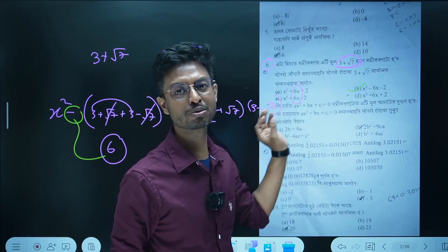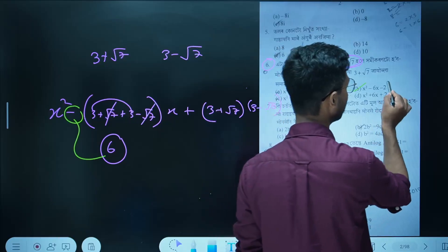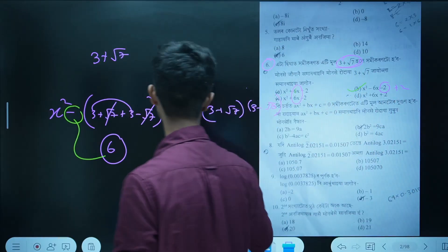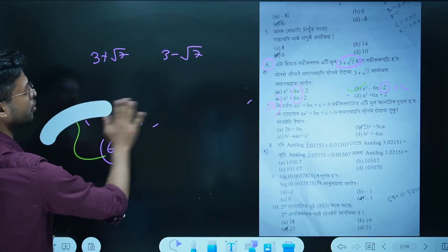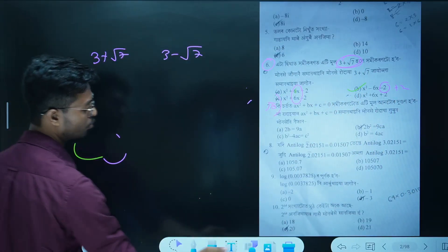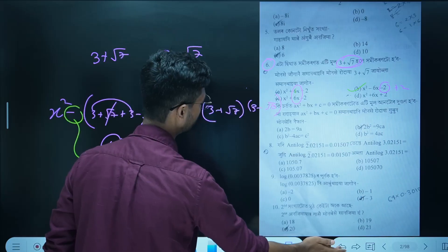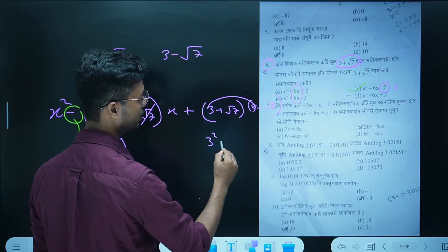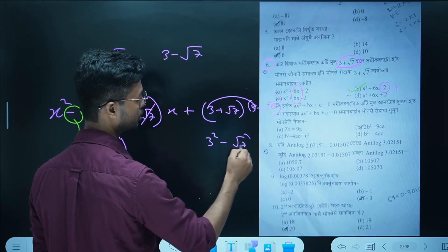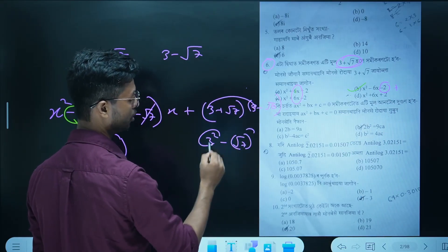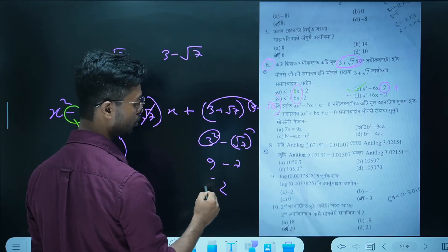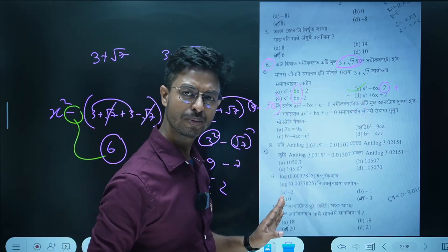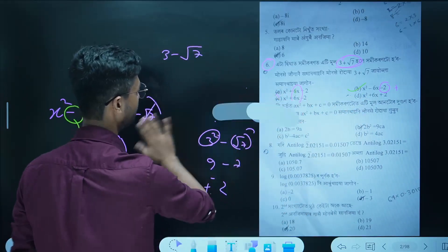Option 2 is minus 2. You've got to say a square minus b square, a square minus b square. Next question — 1 plus root 7, a big question.